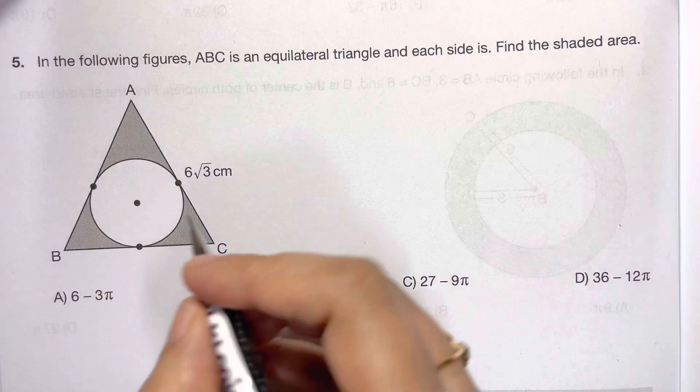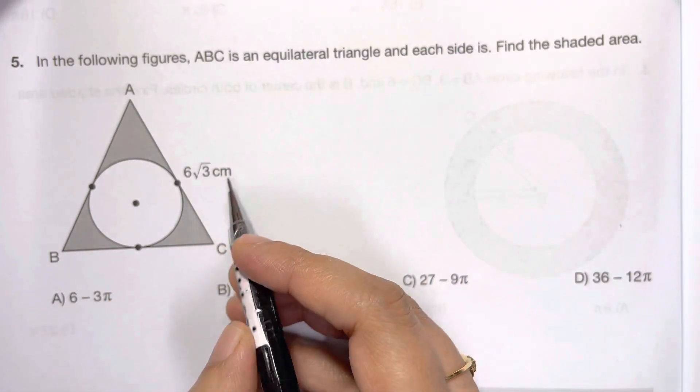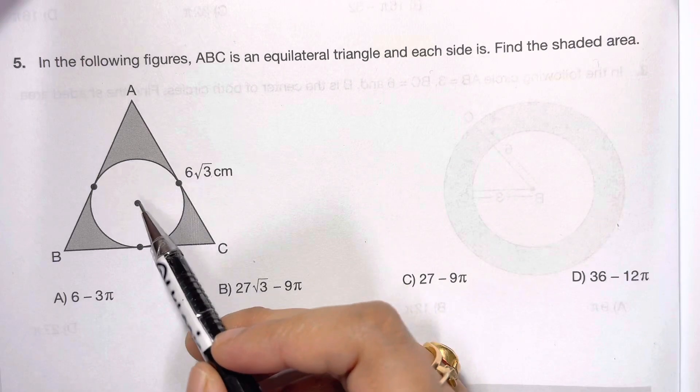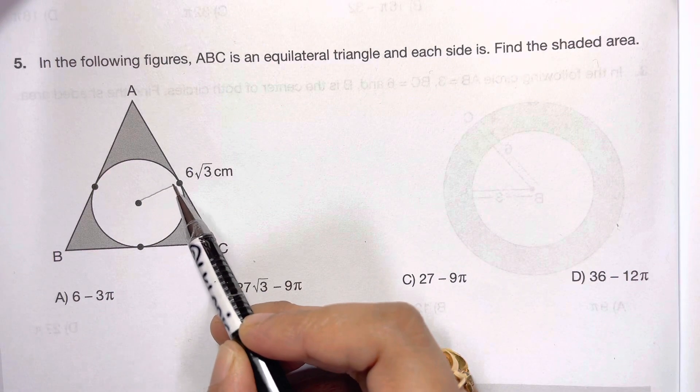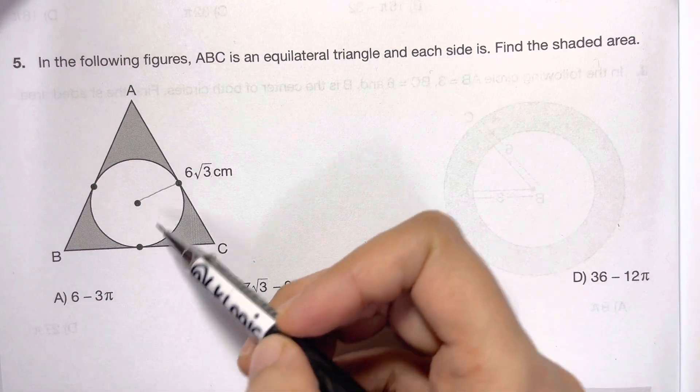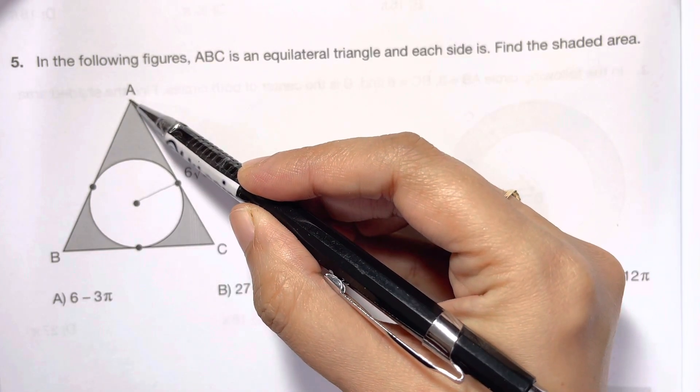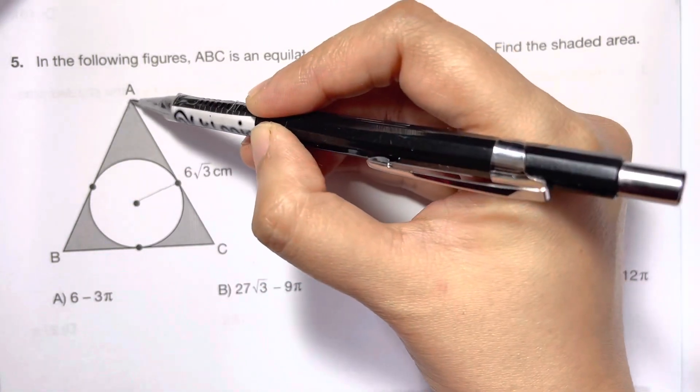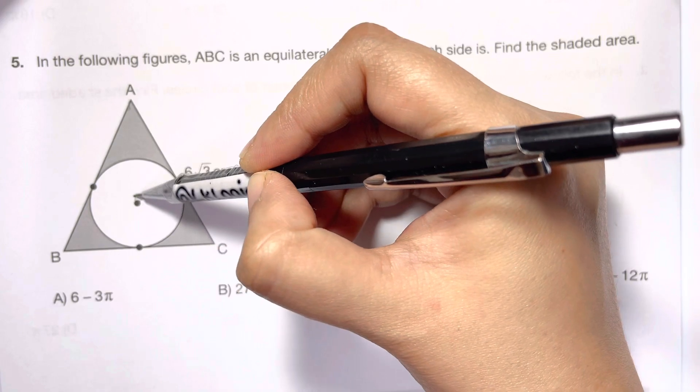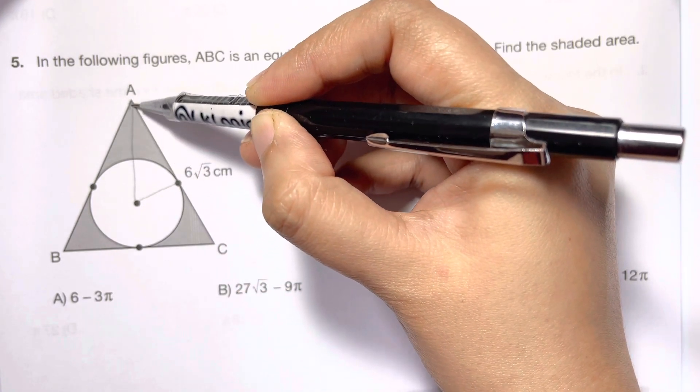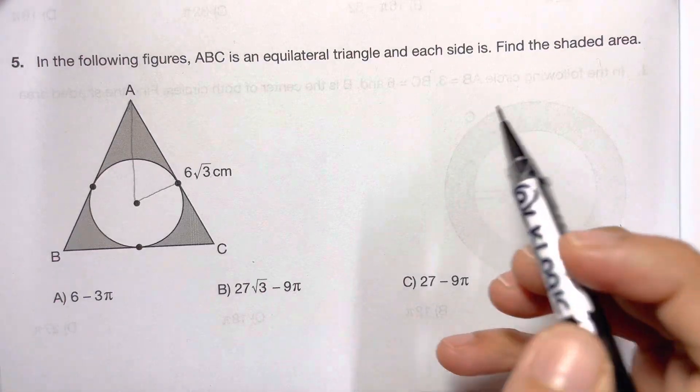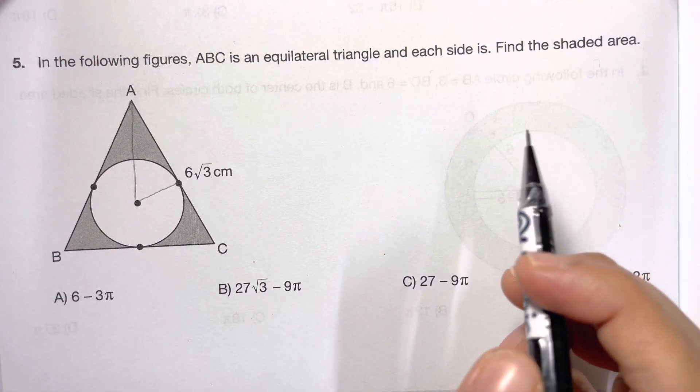Before that, I'm just going to draw the radius. This is the center, from center to the circumference of the circle is the radius, and then I'm going to join this.